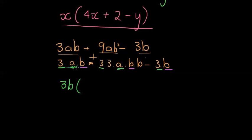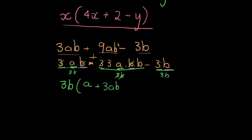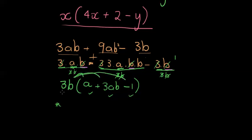Taking out 3b: divide each term by 3b. For 3ab: the 3's cancel and the b's cancel, leaving a. For 9ab²: the 3's cancel and one b cancels, leaving 3ab. For −3b: the 3's cancel and the b cancels — but remember, cancelling doesn't mean zero, it means they divide to give 1 — leaving −1. So the result is 3b(a + 3ab − 1), still three terms.